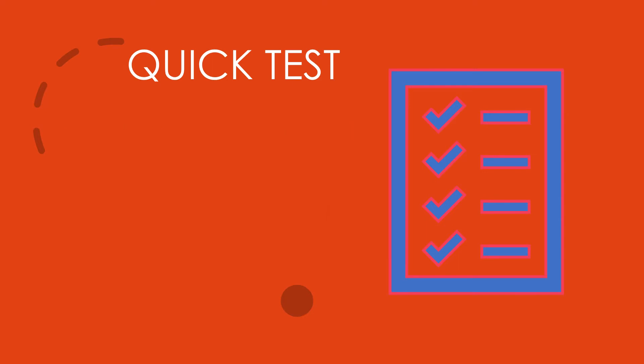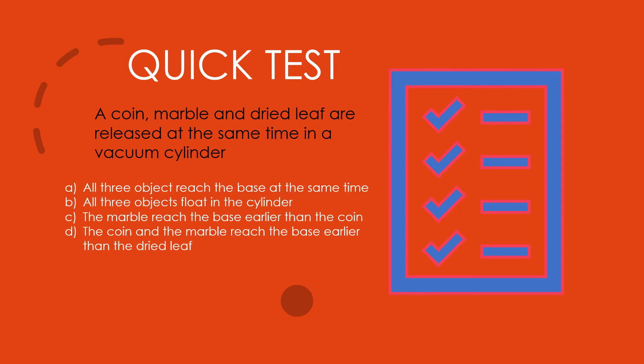For question two, multiple choice question. A coin, marble and dried leaves are released at the same time in a vacuum cylinder. A: All three objects reach the base at the same time. B: All three objects float in the cylinder. C: The marble reaches the base earlier than the coin. D: The coin and the marble reach the base earlier than the dried leaves. So I need you to answer in 10 seconds. 3, 2, 1, go! Time's up. The answer is A. All three objects reach the base at the same time.